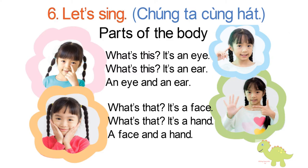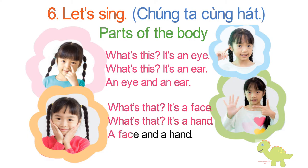Let's sing. Parts of the Body. What's this? It's an eye. What's this? It's an ear. An eye and an ear. What's that? It's a face. What's that? It's a hand. A face and a hand.